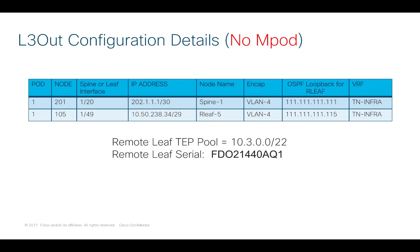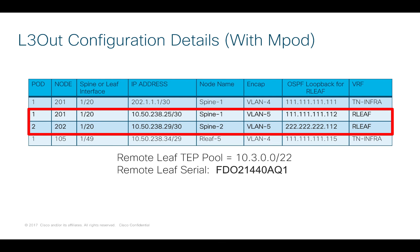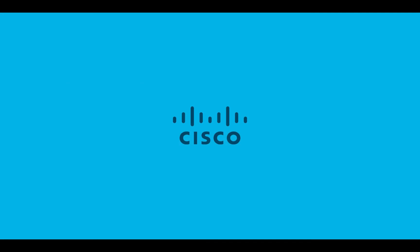I strongly recommend getting organized before you start. Figure out which interfaces are connected, set aside IP addresses for the layer 3 outs, and plan some new loopbacks to support the remote leaf. You'll also need to define a remote leaf TEP pool that's different from anything in your pods, and write down the serial numbers of your remote leaf, as you'll need those when joining it to the main pod. I will show each deployment scenario in an independent video, but the main point here is to get organized and write things down before deployment.